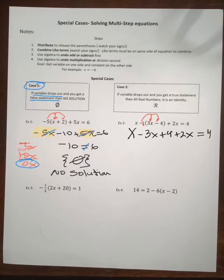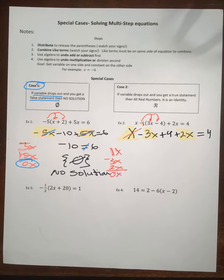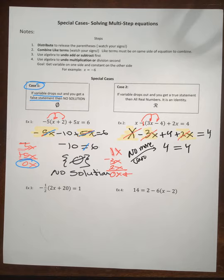Then I need to combine like terms. I have a positive X, a negative 3X, and a positive 2X. Combining those: 1X minus 3X plus 2X gives you 0X's. So the X's drop out because we end up with 0X's, and all we have left is 4 equals 4. The variable dropped out, and we have a true sentence.